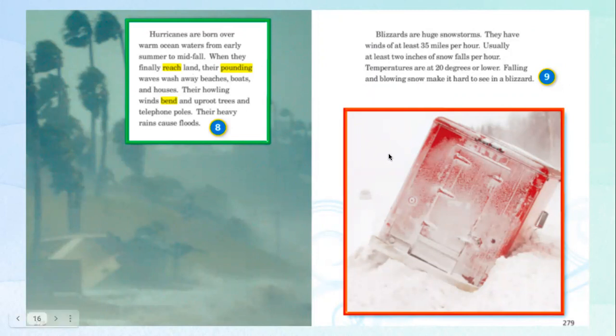Blizzards are huge snow storms. They have winds of at least 35 miles per hour. Usually at least two inches of snow falls per hour. Temperatures are at 20 degrees or lower. Falling and blowing snow make it hard to see in a blizzard.